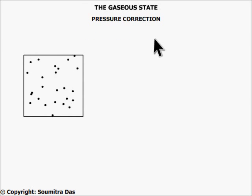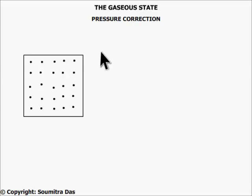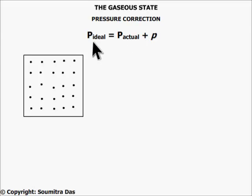There are intermolecular interactions at low temperatures as well as high pressures. The molecules near the walls of the container face intermolecular attractive forces from the molecules just behind them. But other molecules face interactive forces from all sides, and the net effect becomes zero. The result is that the molecules positioned near the wall of the container are pulled back by the molecules just behind them. Therefore, the actual pressure is less than the ideal pressure.